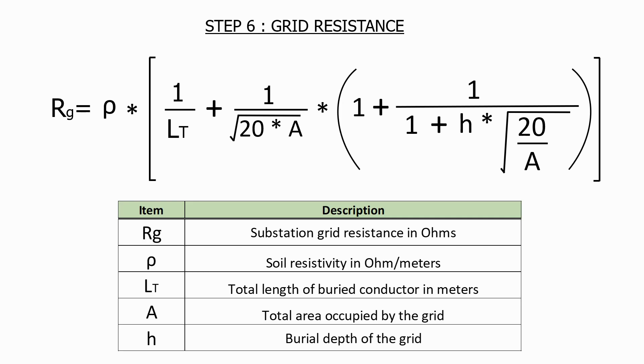Here's the parameters within the formula. Rg, which is the substation grid resistance in ohms that we're trying to find. We have ρ (rho), which is the soil resistivity in ohm metres. Lt, which is the total length of buried conductor in metres. We have A, which is the total area occupied by the grid. And finally we have h, which is the burial depth of the grid. Now that we have a base design from our grid, all of these parameters can be easily calculated.